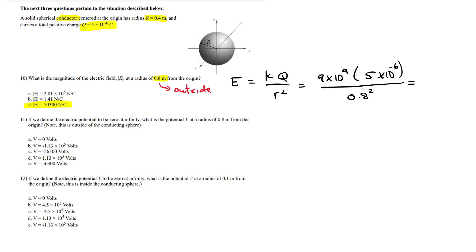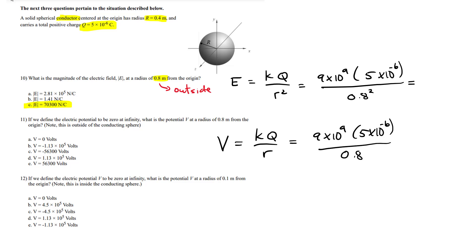If we define the electrical potential to be zero at infinity, what is the potential at the same distance 0.8? You're outside the conducting sphere, so it still behaves like a point charge. The potential is KQ divided by R — no R squared. Same numbers: 9 times 10 to the 9, times 5 times 10 to the minus 6, divided by 0.8 gives 56,000 volts. It's a positive number because it's a positive point charge.